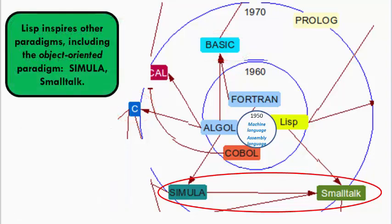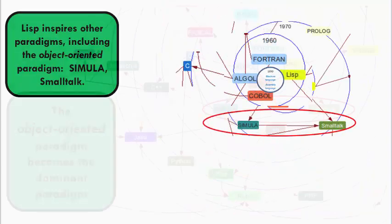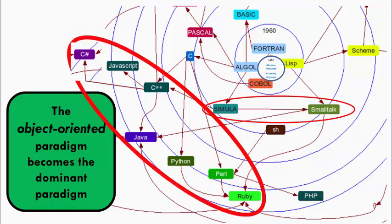As programming languages have continued to develop in the last 45 years since Smalltalk, the dominant paradigm, since C++ was introduced in 1979, has been the object-oriented paradigm. Almost all of the important and widely used languages since then have been object-oriented. This includes the language we use in this course, Python, developed about 25 years ago.